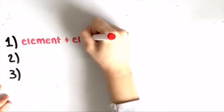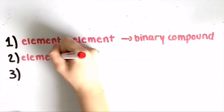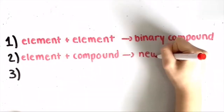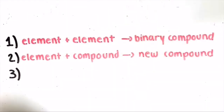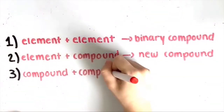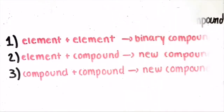Firstly, two elements forming a binary compound. Secondly, an element and a compound forming a new compound. And thirdly, two compounds forming a new compound.